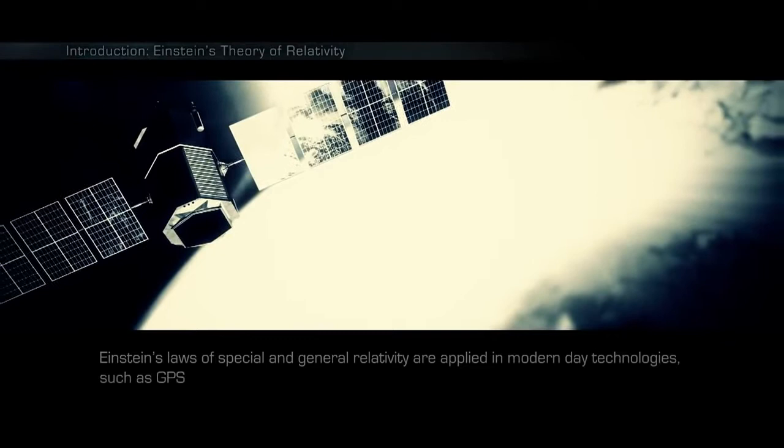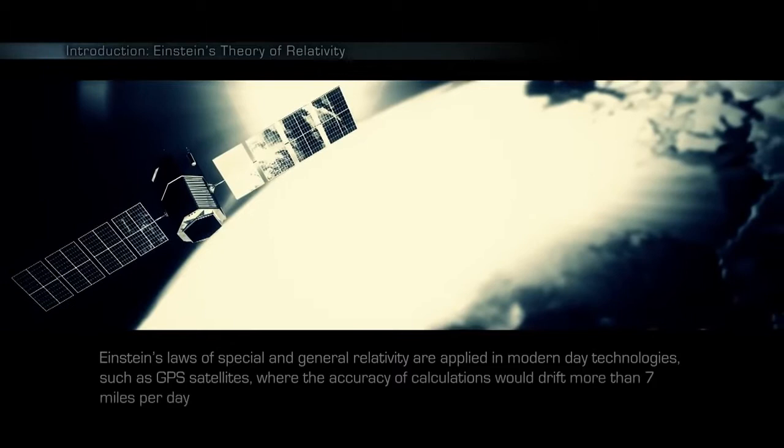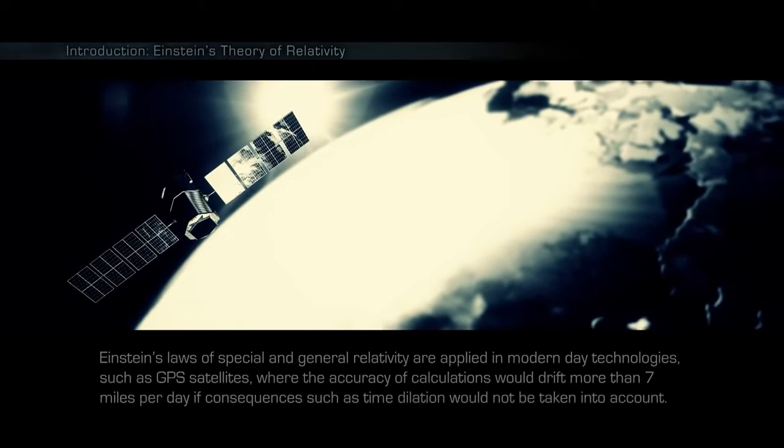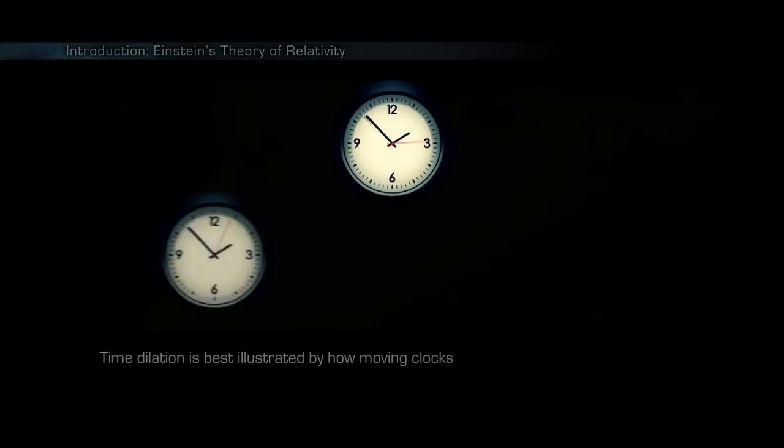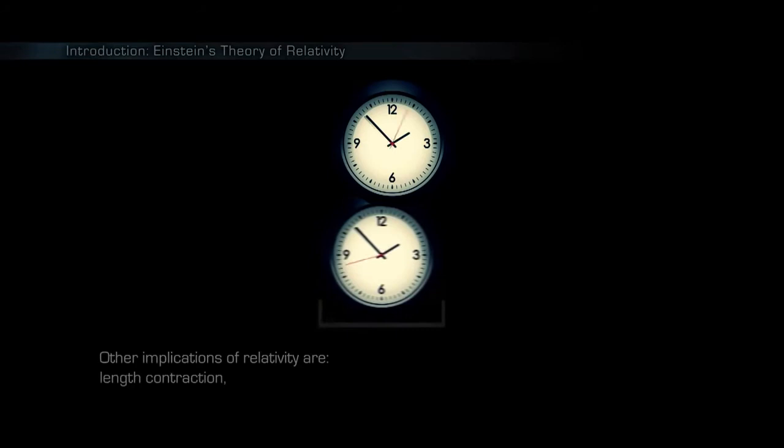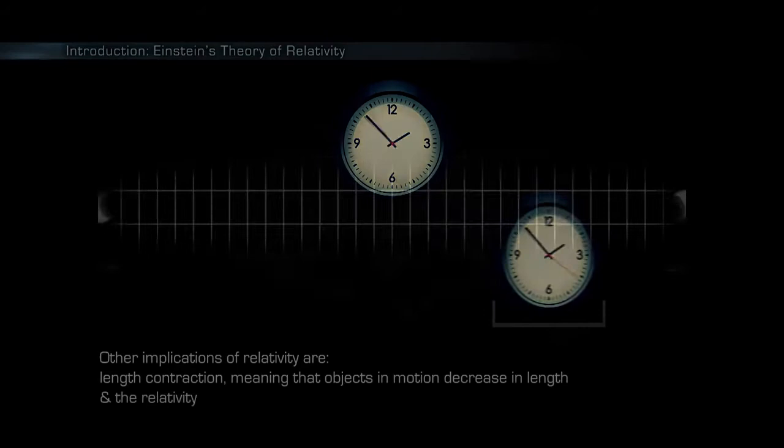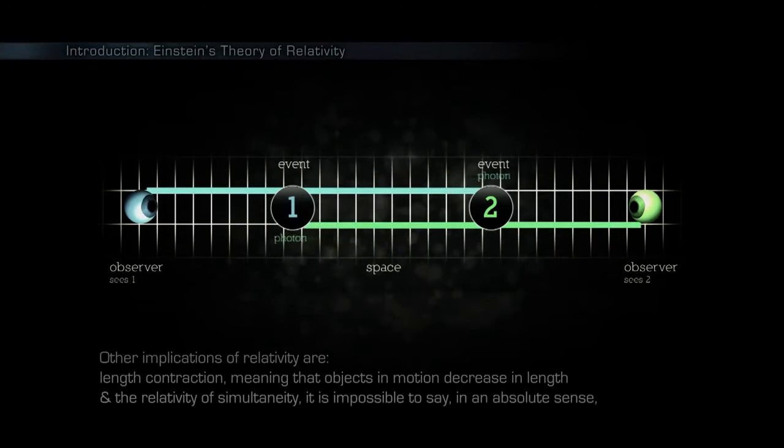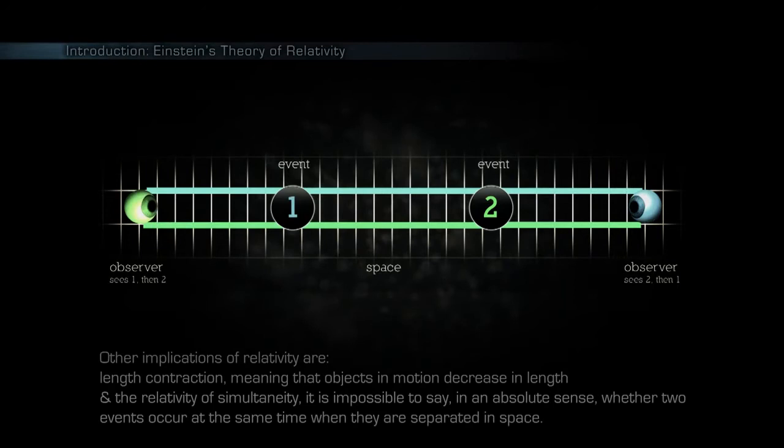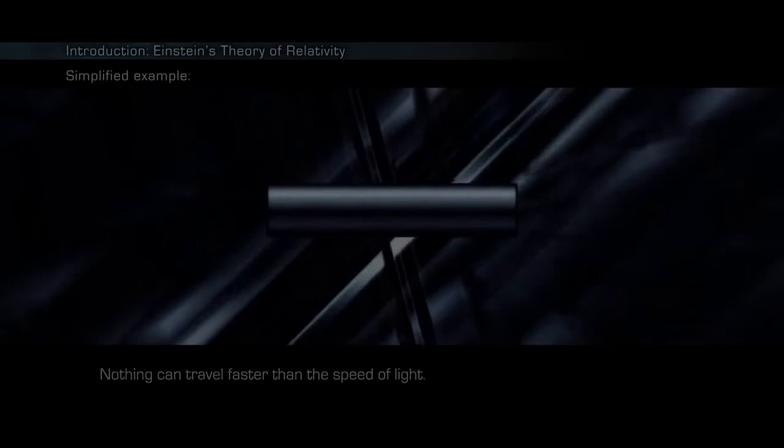Einstein's laws of special and general relativity are applied in modern-day technologies, such as GPS satellites, where the accuracy of calculations would drift more than 7 miles a day if consequences such as time dilation would not be taken into account. Time dilation is best illustrated by how moving clocks run slower. Other implications of relativity are length contraction, meaning that objects in motion decrease in length, and the relativity of simultaneity. It is impossible to say in an absolute sense whether two events occur at the same time when they are separated in space.